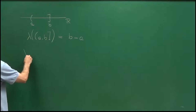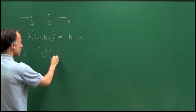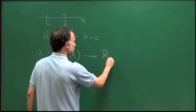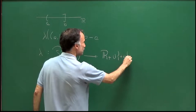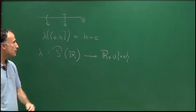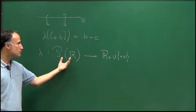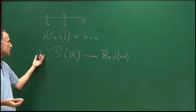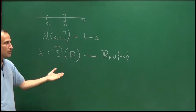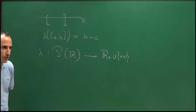My goal will be to try to find a function lambda, which is defined on all subsets of R — I'm representing by P(R) all the subsets of R — to the set R+ union {+∞}, which extends the idea of length. It's clear what we mean by the length of an interval. We would like to extend this idea to all subsets of R. So what would be the measure of the rational numbers, or the rational numbers between 0 and 1? This is the type of question we would like to answer.